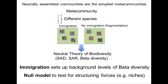Immigration sets up a background level of diversity, and all the other forces and mechanisms we are really interested in act on top of that. So we can use the neutral theory as a null model to test for the structure and forces we are really interested in, like niche dynamics, environmental filtering, or disturbance.